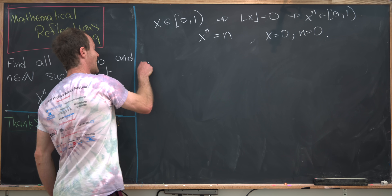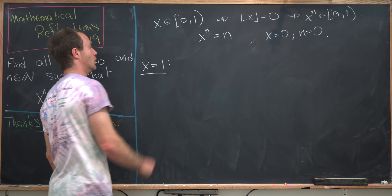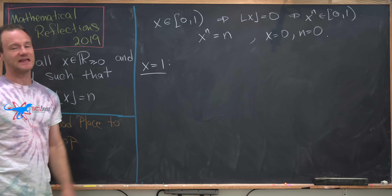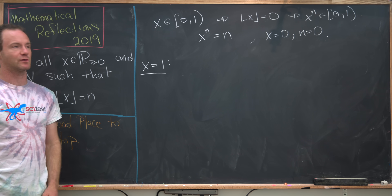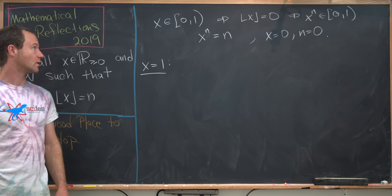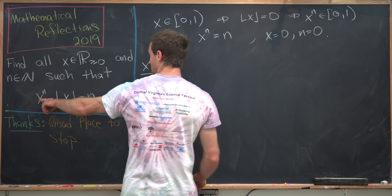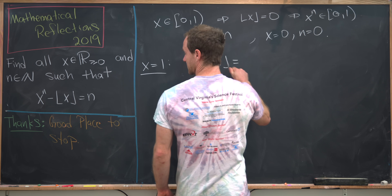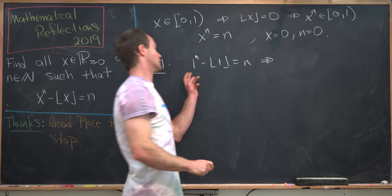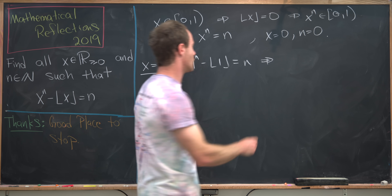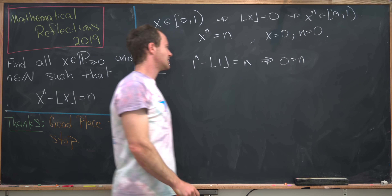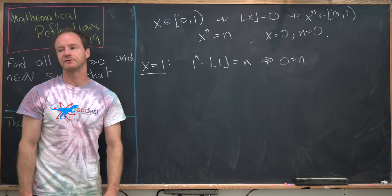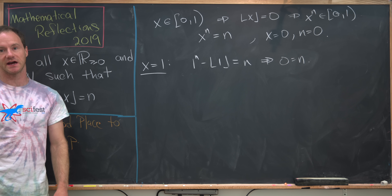The next short case is x equals 1. So we're splitting into three cases: x less than 1, x equal to 1, and the bigger case x greater than 1. If x equals 1, then we have 1 to the n minus the floor of 1 equals n, which collapses to 1 minus 1 equals n, or n equals 0. So again, maybe we have a solution x=1 and n=0, depending on whether 0 is considered a natural number.